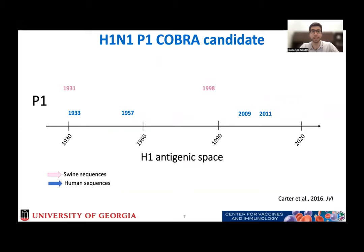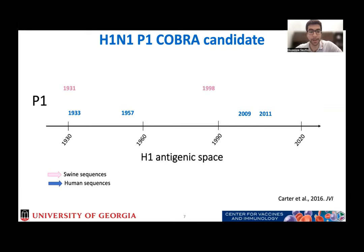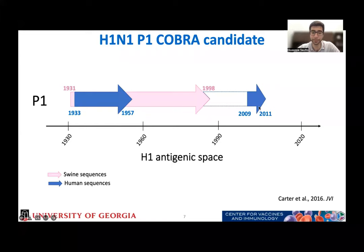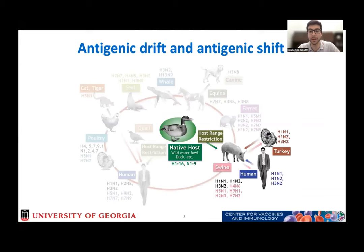This is a schematic of one of our COBRA candidates, for example for H1N1, which is called P1. We designed this to have sequences not only from human sequences, but also from swine sequences. For P1, we have human sequences covering the 1933–1957 and 2009–2011 timeframes, and then swine sequences from 1931 to 1998. It's important to include swine sequences because we have a constant exchange of strains between the swine population and the human population — swine represents a melting pot, including also avian strains, since they can be affected not only by humans but also by avian viruses.